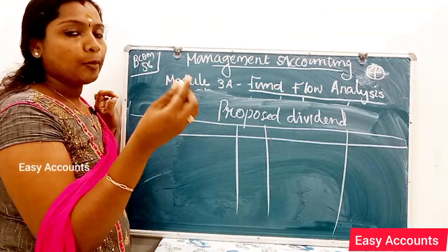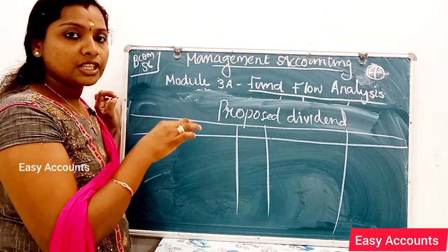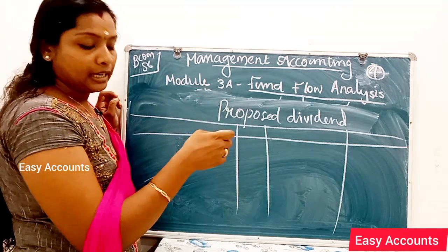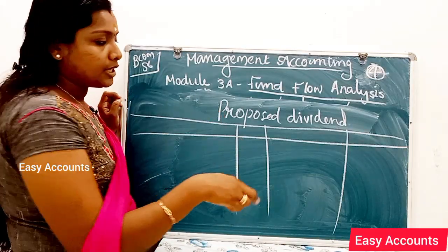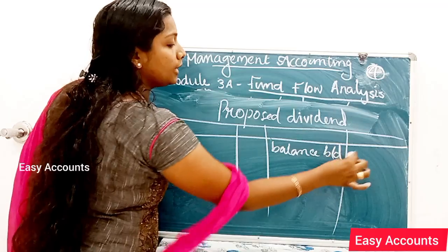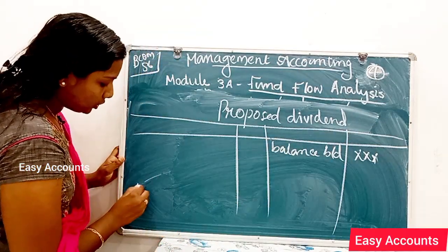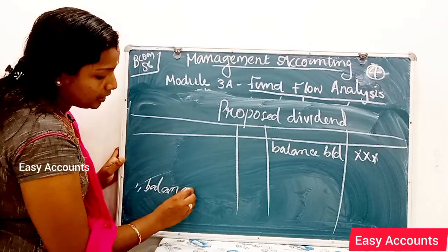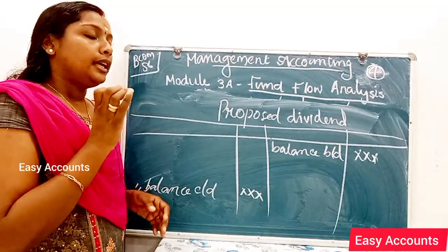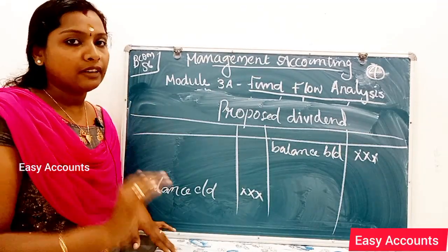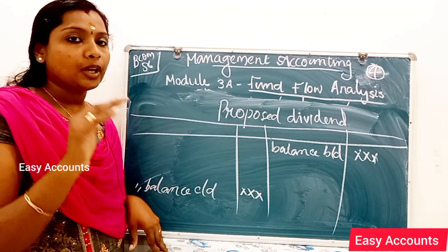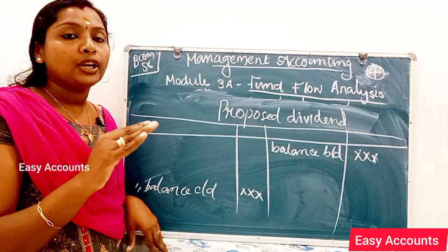If you have an opening balance for this amount, the closing balance follows. The opening balance appears on the credit side because it is a liability. The closing balance appears on the debit side. The dividend will be fixed by the provision made during the year. What is the provision for dividend made during the year?